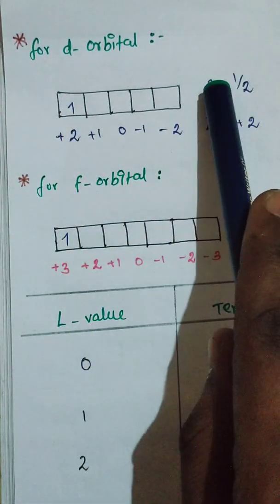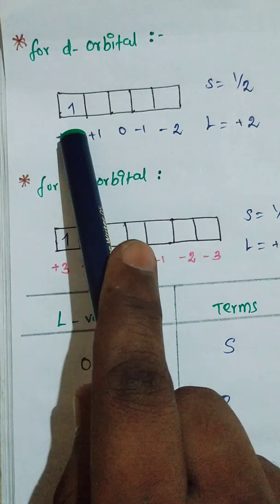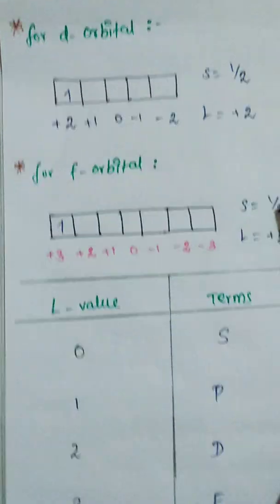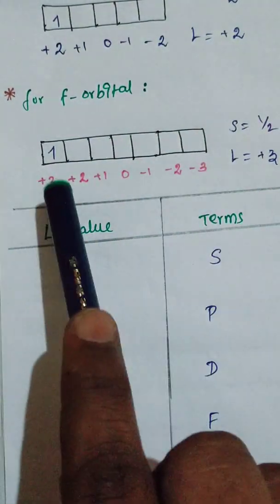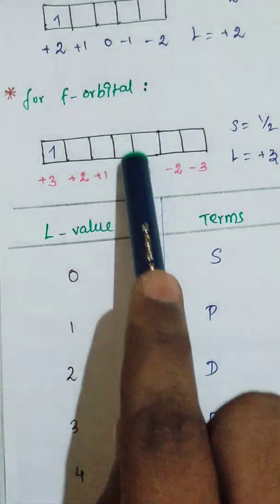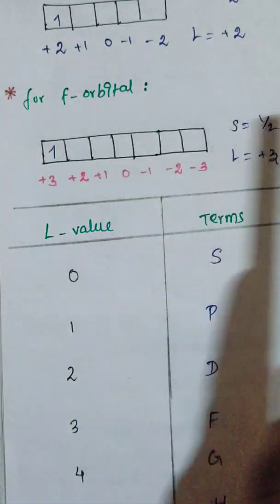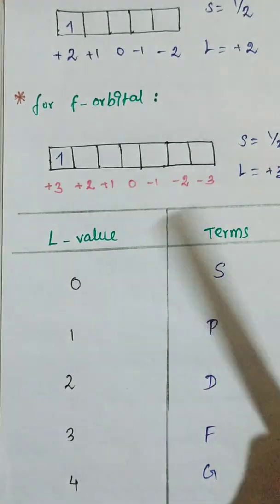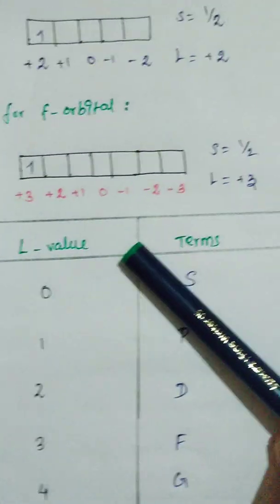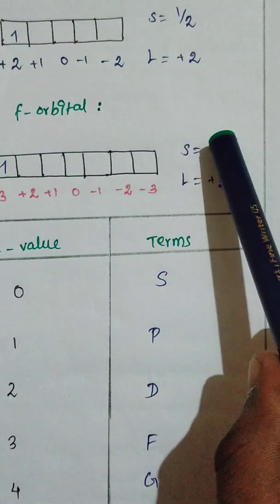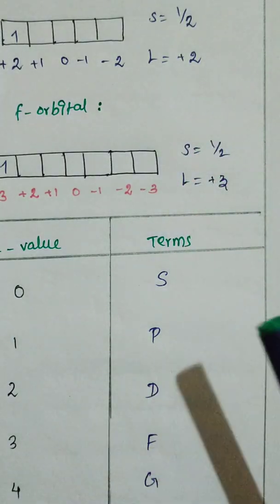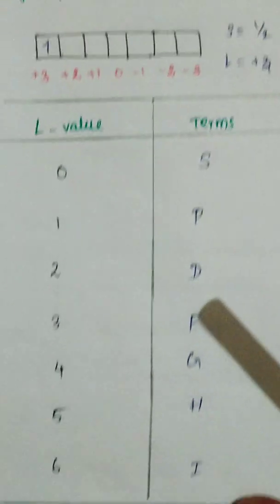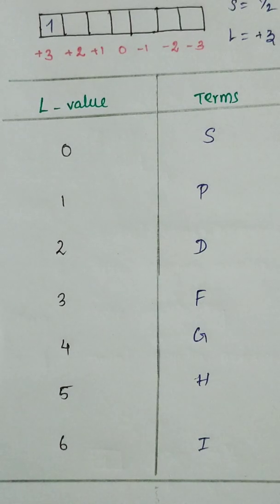For the s orbital, spin value equals half and L value equals zero. For the d orbital with one electron, spin value equals half and L value equals plus two. For the f orbital, it has seven subshells: plus three, plus two, plus one, zero, minus one, minus two, and minus three. So with one electron, spin value equals half and L value equals plus three.